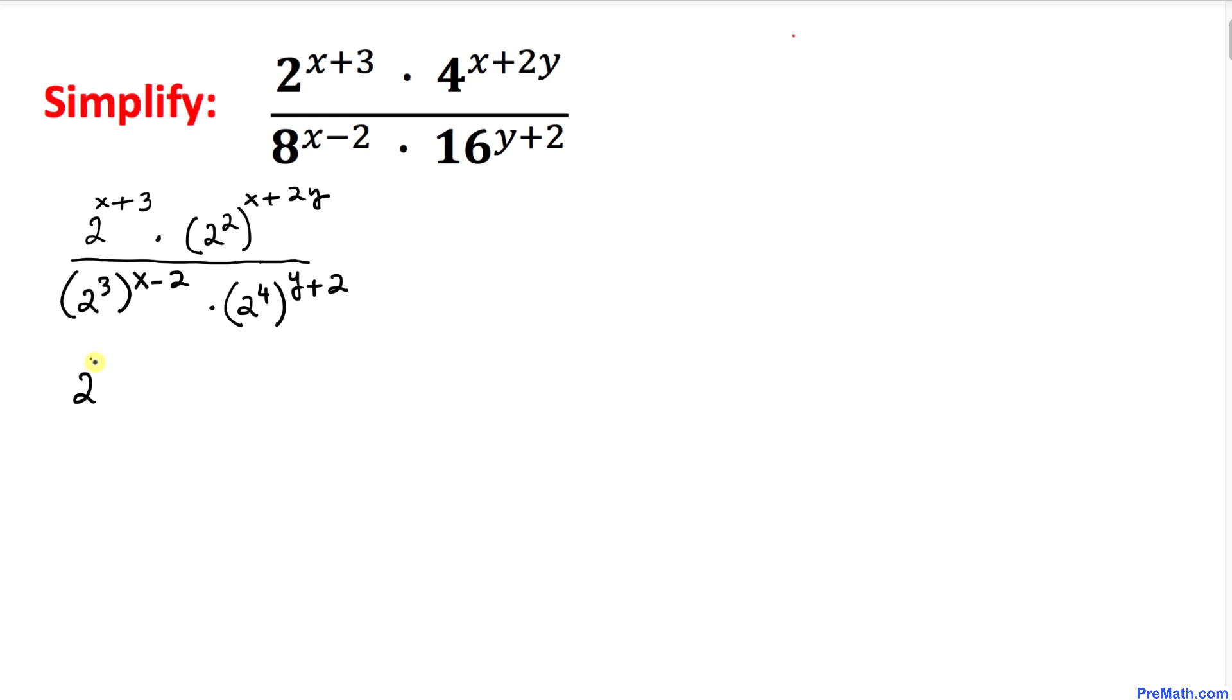I can write 2^(x+3) times—let's focus on this part. We're going to use the power rule, so this can be written as 2^(2x+4y).